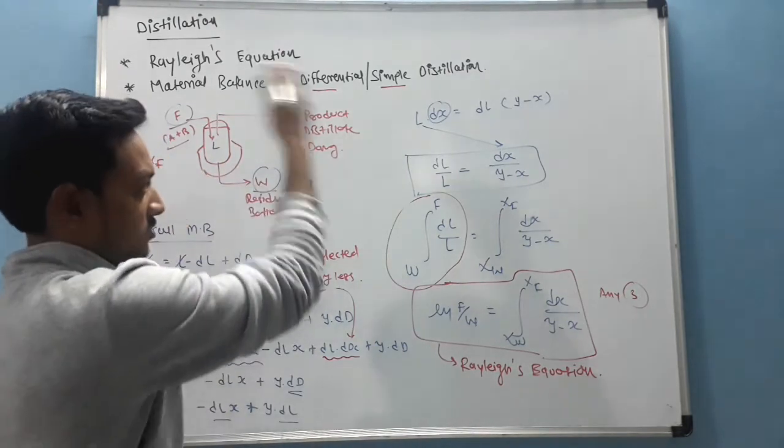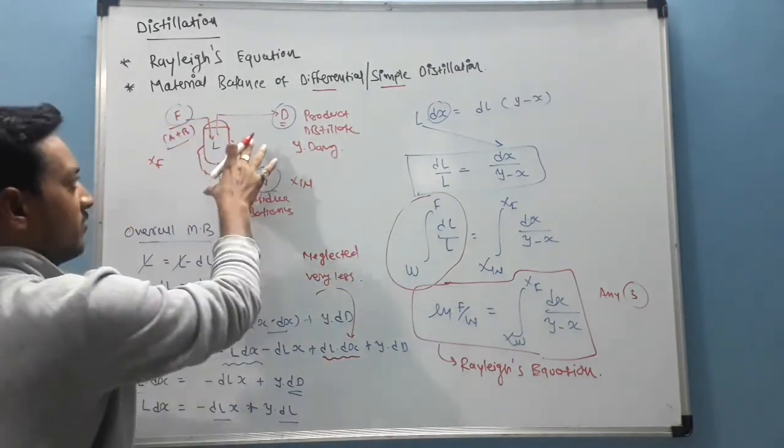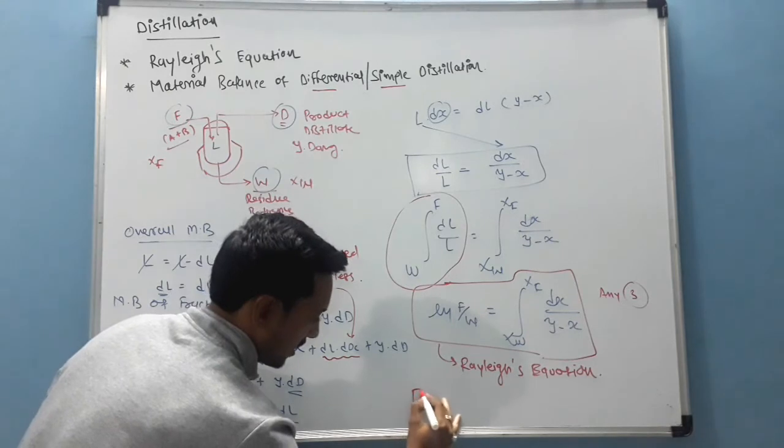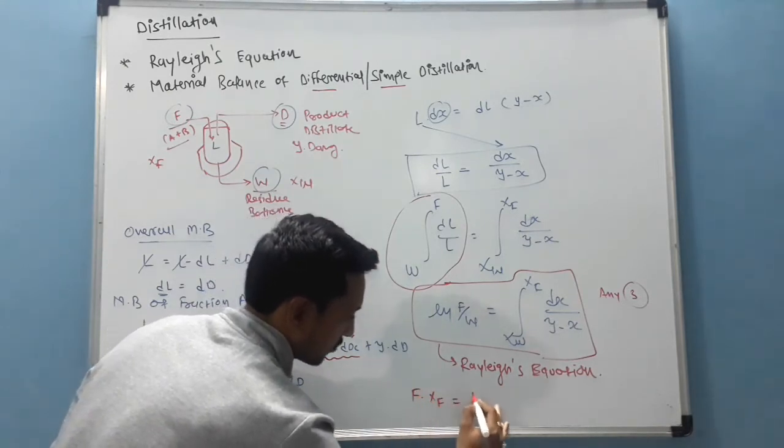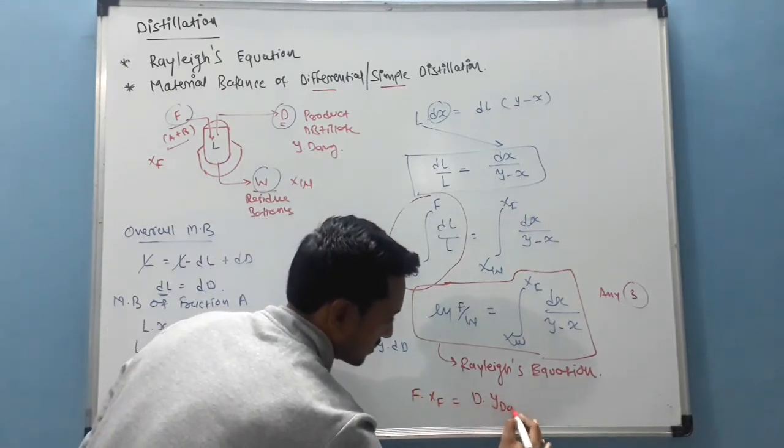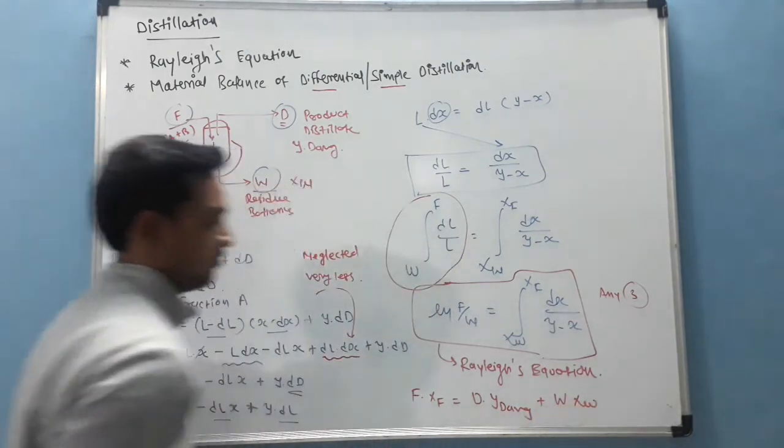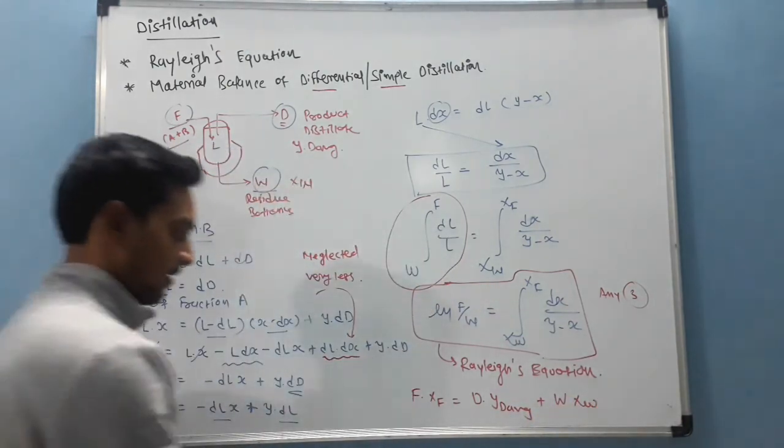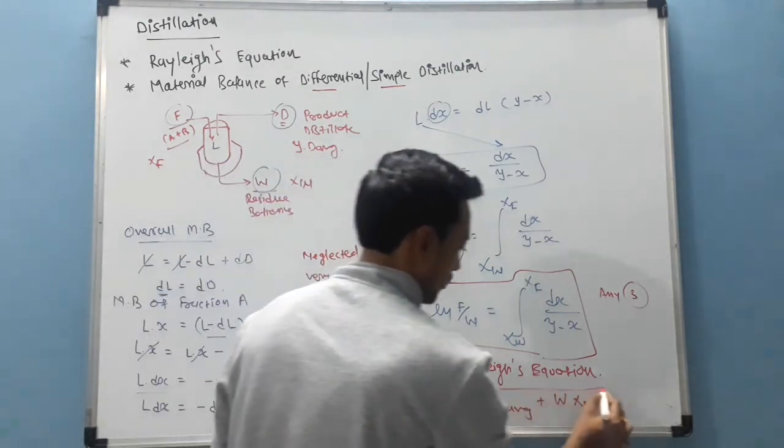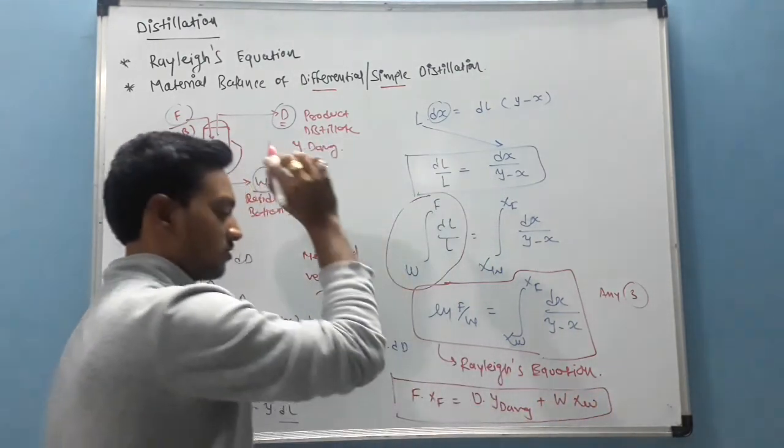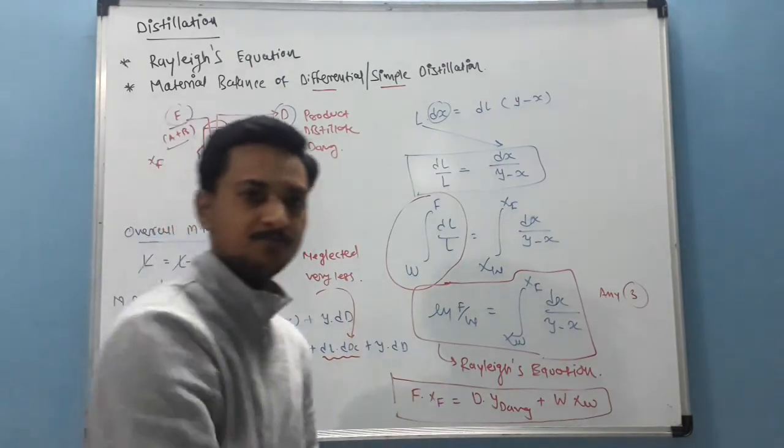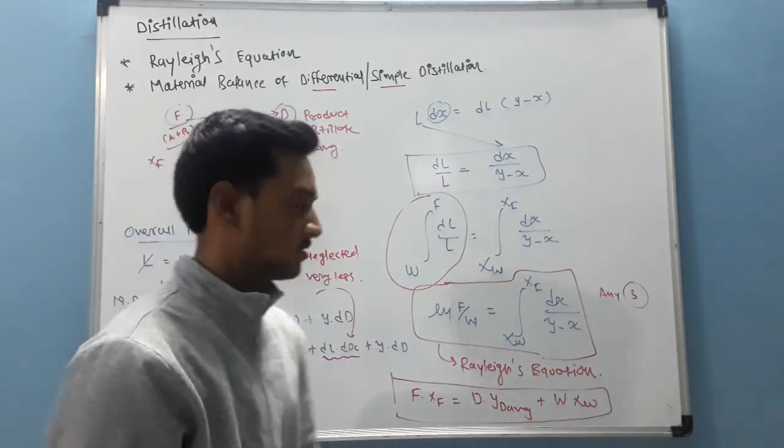The overall material balance from this figure is F into XF is equal to D into YD average plus W into XW. From this equation, we can also calculate the quantities of feed, residue and products.